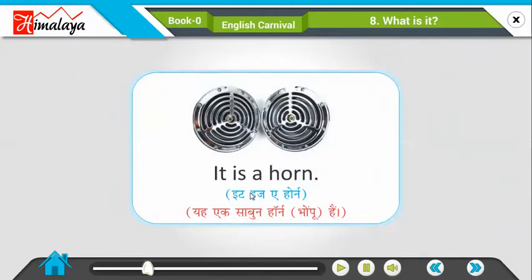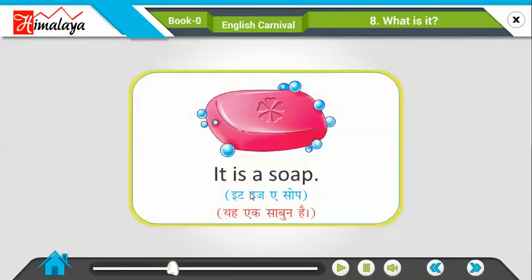It is a horn. Yeh aeg horn yani ki bhaupu hai. It is a soap. Yeh aeg saapun hai.